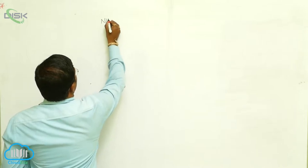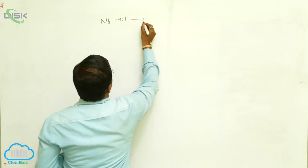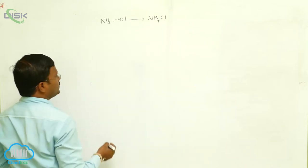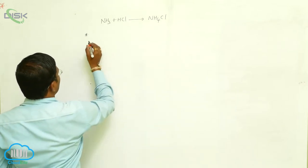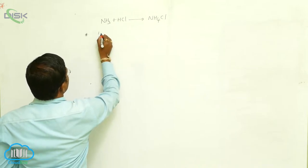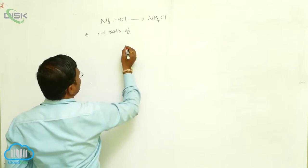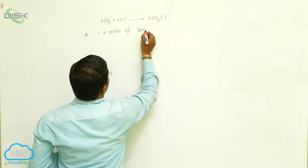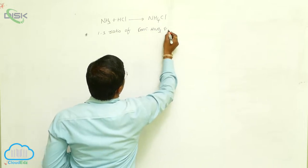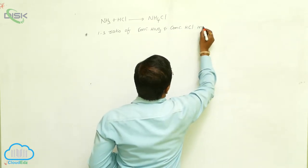Hydrogen chloride reacts with ammonia to produce dense white fumes of ammonium chloride. Importantly, a 1:3 ratio of concentrated HNO3 and concentrated HCl mixture is known as aqua regia.